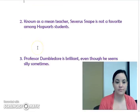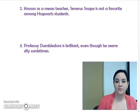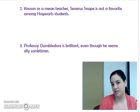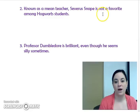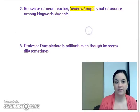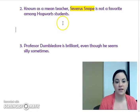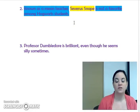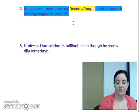Let's look at another example: 'Known as a mean teacher, Severus Snape is not a favorite among Hogwarts students.' So who is this sentence about? The sentence is about Severus Snape — that's our topic. And what does the writer want to tell us about Severus Snape? That he is not a favorite among Hogwarts students and that he is known as a mean teacher. Those two parts are our controlling idea.